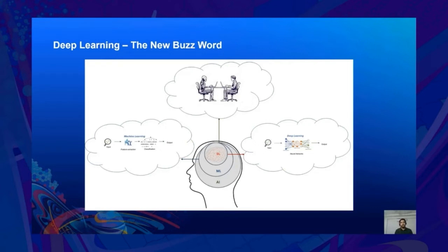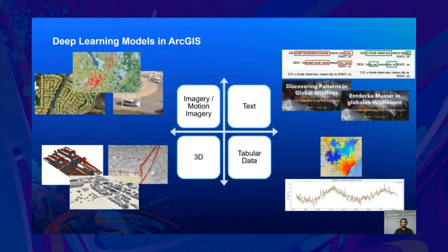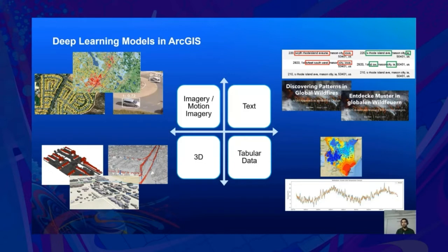Esri is passionate about enabling its users with tools to apply deep learning for solving complex problems, mainly but not limited to GIS. To this end, we have added a vast variety of models in ArcGIS to handle different types of inputs such as imagery, motion imagery, 3D, text, and tabular data. In this session, we will cover the models on the left — namely imagery, 3D, and motion imagery models. The models on the right will be covered in other sessions at the summit.